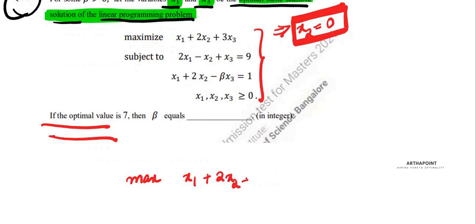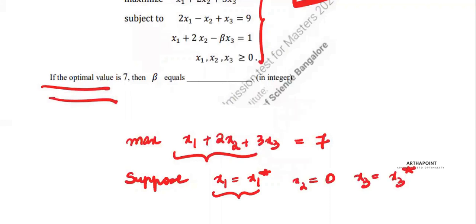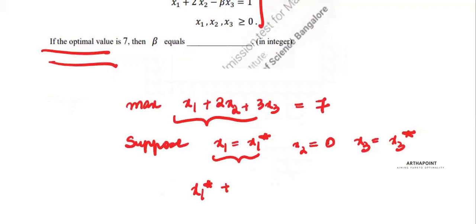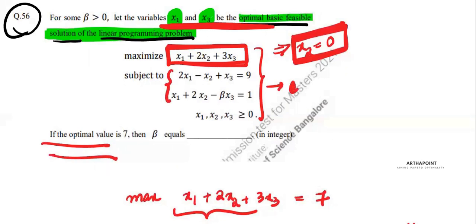We are maximizing x1 plus 2x2 plus 3x3, and when we maximize this the value we get is 7. So putting x1 equal to x1 star, x2 equal to 0, and x3 equal to x3 star, we get that x1 star plus 2 times 0 plus 3x3 star is equal to 7.